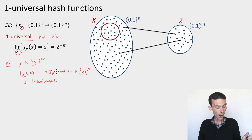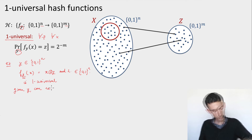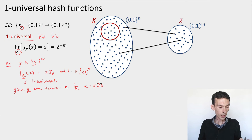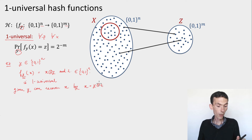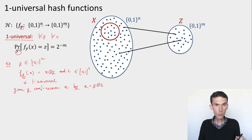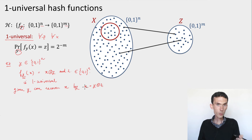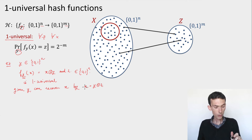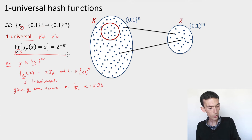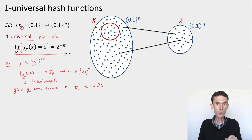Is it secure? No — this doesn't give us a strong extractor. Because if you're given y, you can recover x. If one bit of x is fixed, say the first bit, then when you're given the output z and the seed y, you only have to compute x XOR y to recover x and look at the first bit to see if it matches your side information. So this is not a strong seeded extractor. The one-universal condition is desirable, but in order to get a strong extractor we're going to need something stronger: two-universal families of hash functions.